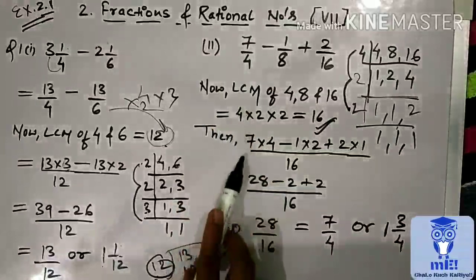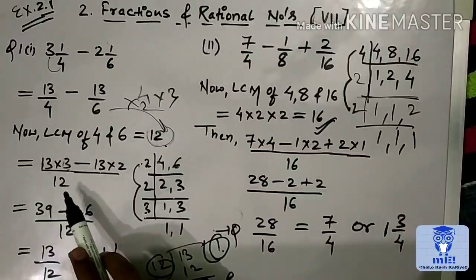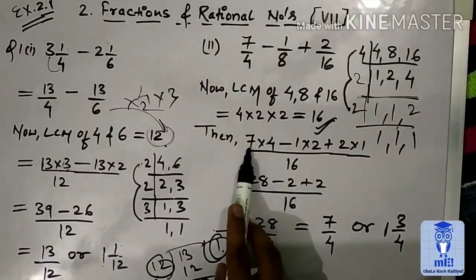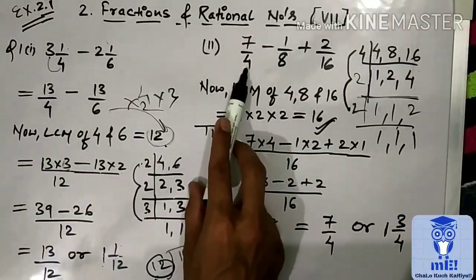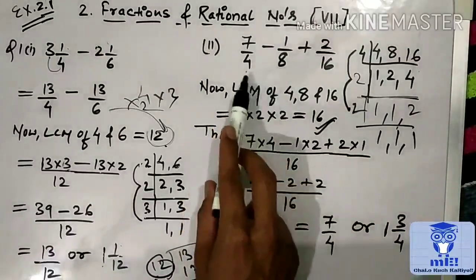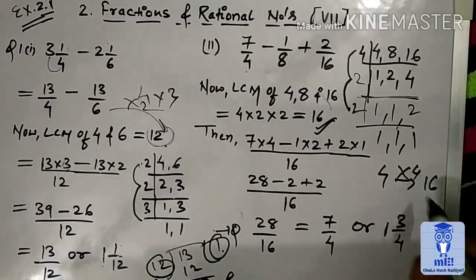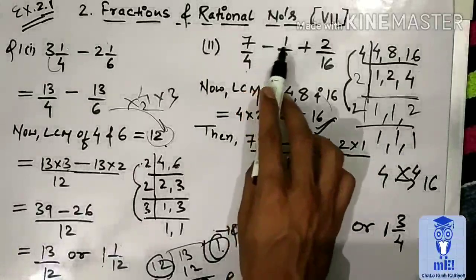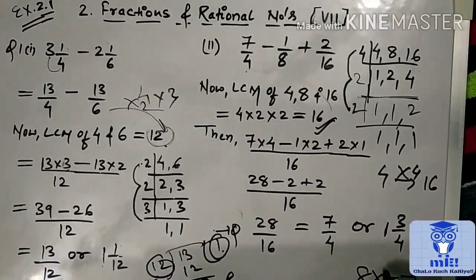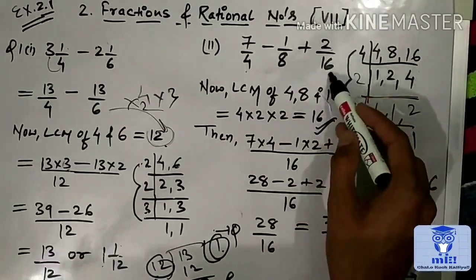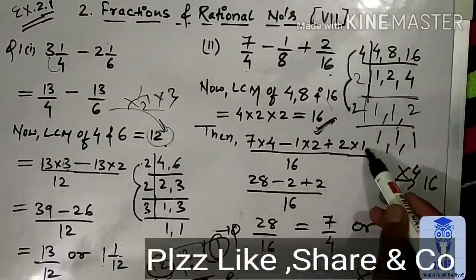Again, first numerator term is 7. Same procedure we have to apply. Numerator term 7, we have to multiply by which number according to the denominator value? Here, denominator is 4. By 4, 4 by which number we have to multiply so we can get LCM 16? By 4. So, multiply by 4 minus 1. Again, denominator term 8. By which number we have to multiply? We can get 16 by 2 plus 2. Denominator term 16. And we want LCM is also 16. Multiply by 1.